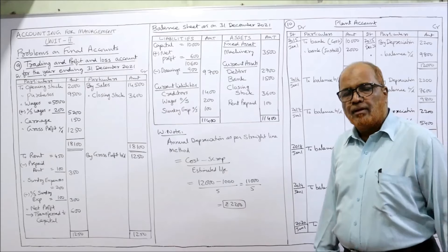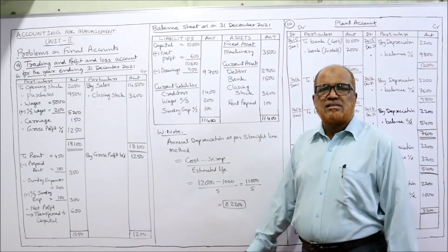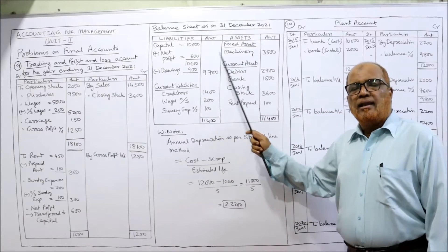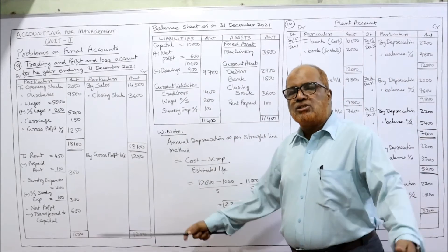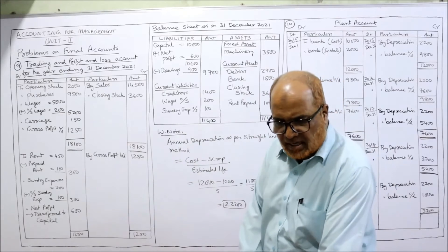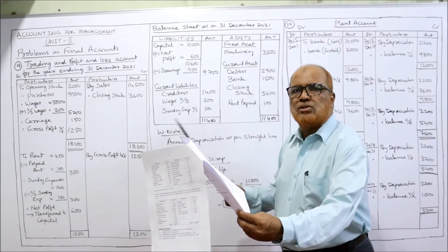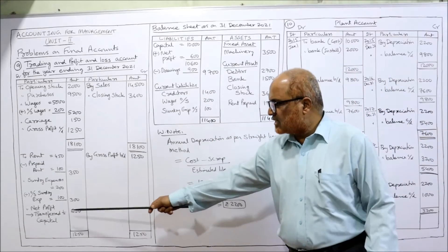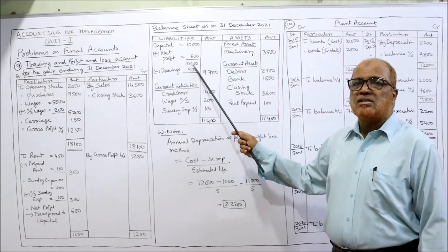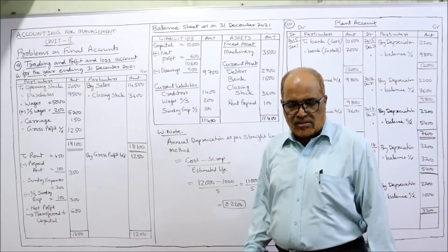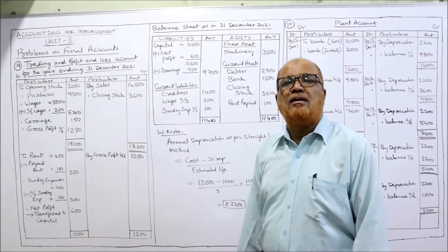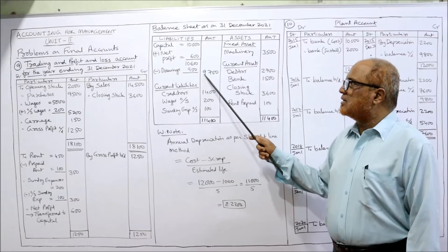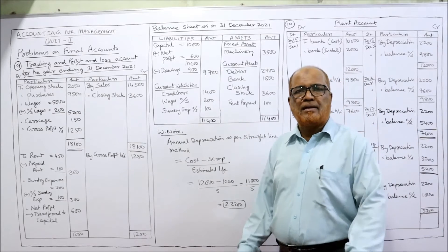Balance Sheet as on 31st December 2021. On the liabilities side, the first item as usual is capital: given as 10,000. Add net profit 600, giving 10,600. Subtract drawings of 900, so adjusted capital is 9,700.